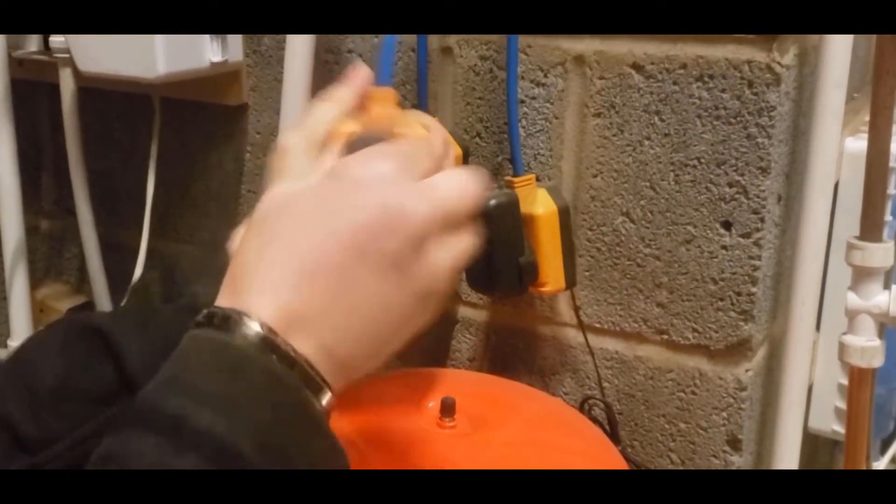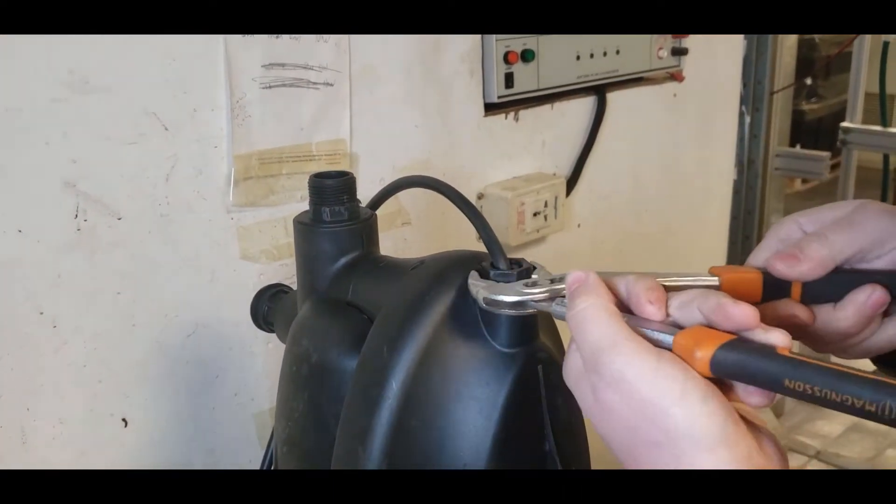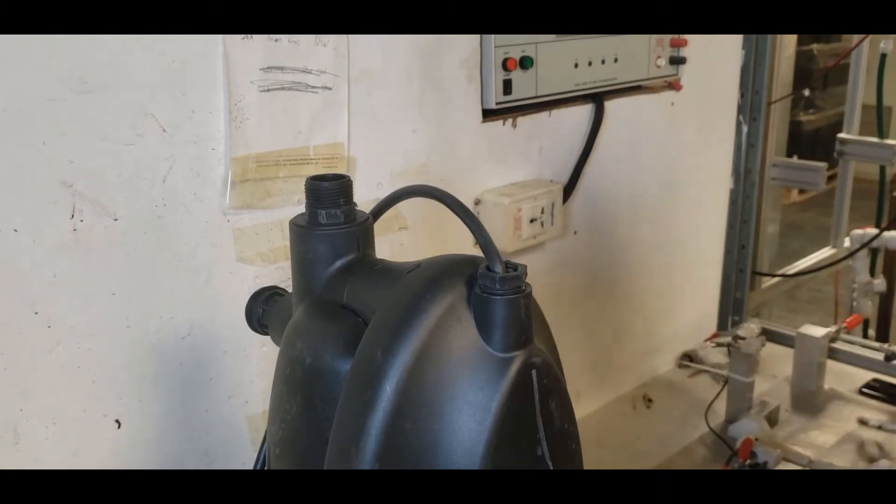Turn the pump off and isolate it from the source. Loosen the gland bolt to give the power cable some slack so it won't become damaged when removing the cover.